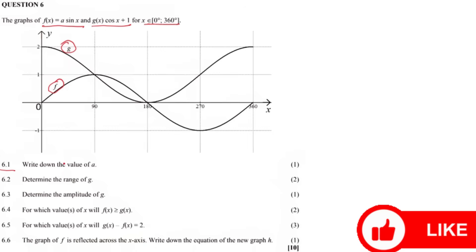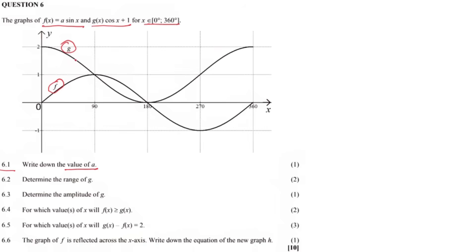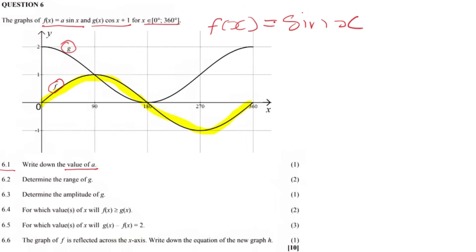Question 6.1 says we must write down the value of a. The value of a is found in f of x. The function f of x is the highlighted one — it is the original graph of sine x. So f of x is given by sine x, which means the value of a is 1. So a equals 1.